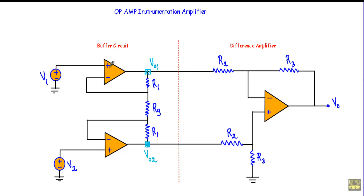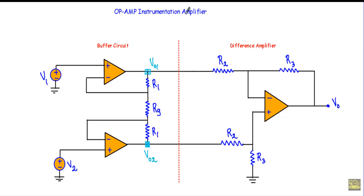Since the circuit is a buffer circuit, it will have very high input impedance. We can control the gain of the operational amplifier by using this resistor RG — this RG allows us to control the gain of the amplifier. The op-amp instrumentation amplifier uses three op-amps: this is one op-amp, this is another op-amp, and this is another op-amp.